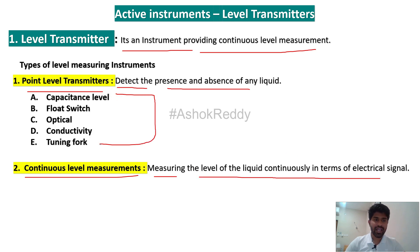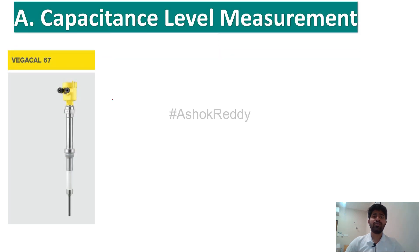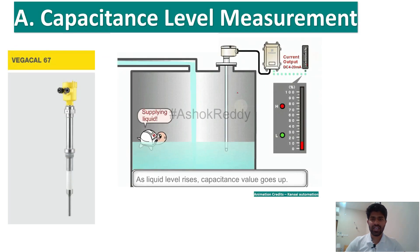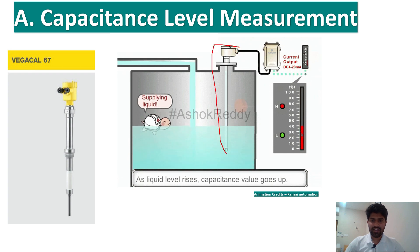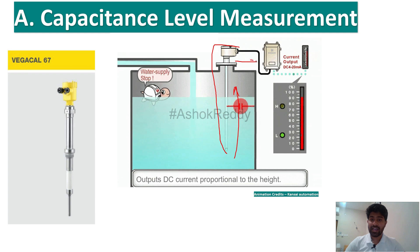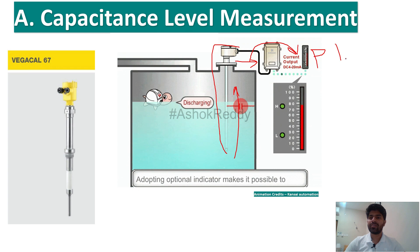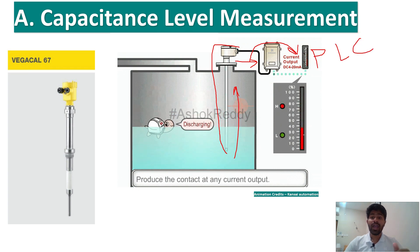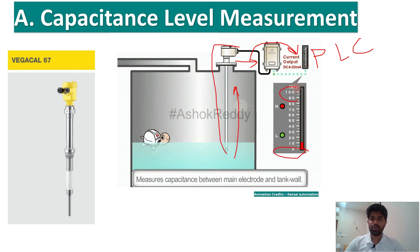There are 5 types of point level transmitters and 2 types of continuous level measurement. The first point level measuring instrument is the capacitance type. If you see here, this is a capacitance level transmitter — whenever the water level is more, the capacitance will increase and it will convert that capacitance into an electrical signal and send it to the PLC. If the level is low, the capacitance will get low and it will send a low current, showing 0 to 100 percent.